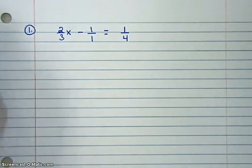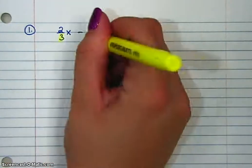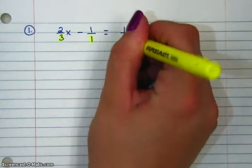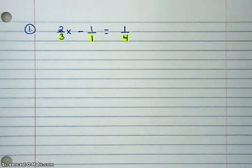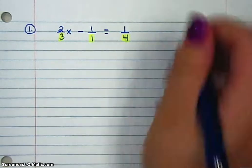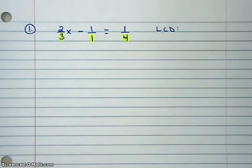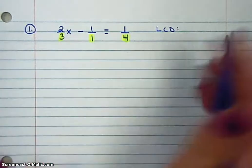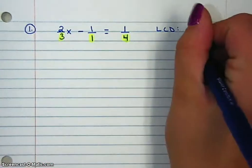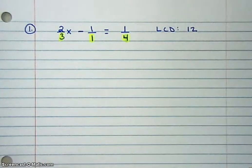So now I have the denominators 3, 1, and 4. I need to find the least common denominator, or the LCD. This one is 12, but if you don't know what it is, you can always find it by counting.